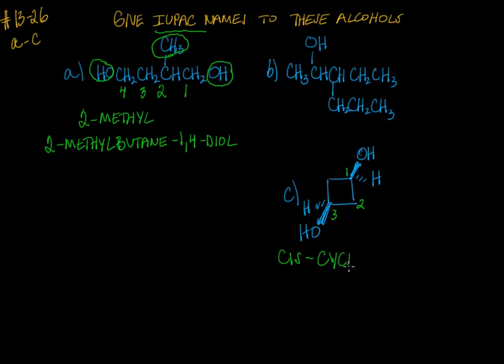Don't forget the prefix cyclo, cyclobutane. And then we number the positions of the two hydroxyl groups, carbons 1 and 3, and add the ending diol. So cis-cyclobutane 1,3-diol.